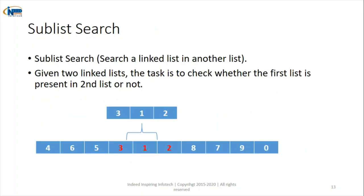The sixth algorithm is sublist search. Sub means a part, so sublist means a part of a list. Here we have a complete list and we want to find a sublist inside it — for example, finding the sequence 3-1-2 inside a bigger list. This mechanism is known as sublist search.